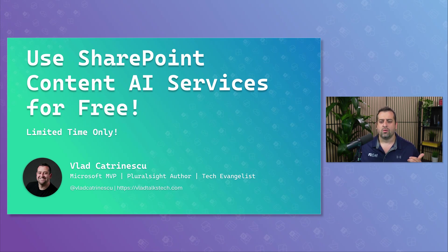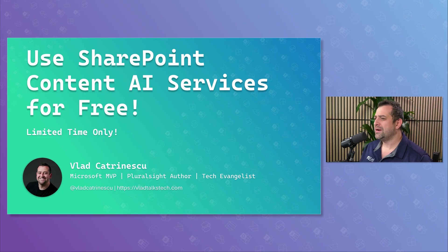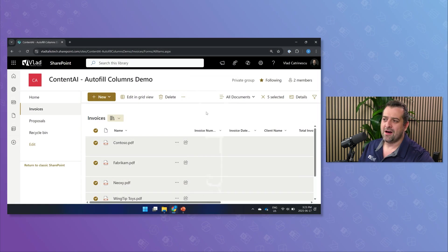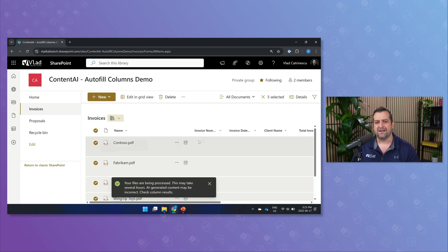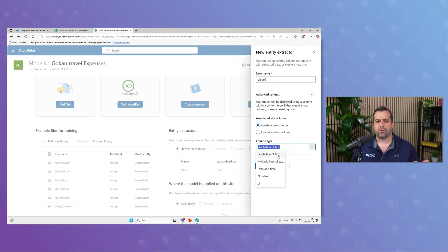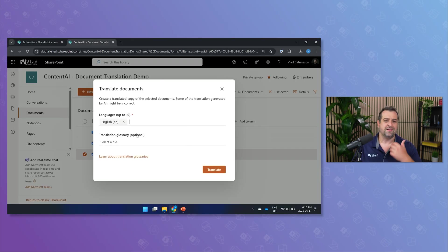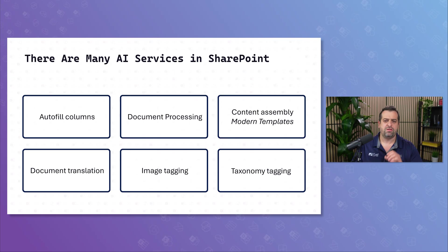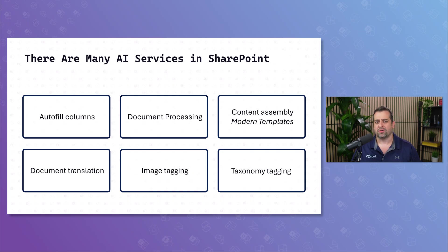Let's start with what is actually included. SharePoint Content AI services go far beyond basic automation. We're talking about autofilling columns based on file metadata, advanced document processing, content assembly with modern templates, document translation, image tagging, and even taxonomy tagging to better organize your content. Those features can save hours of manual work and bring consistency across your content libraries.